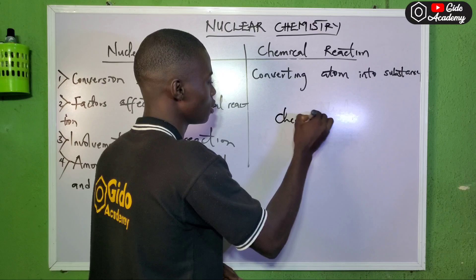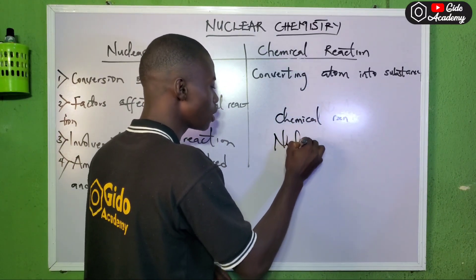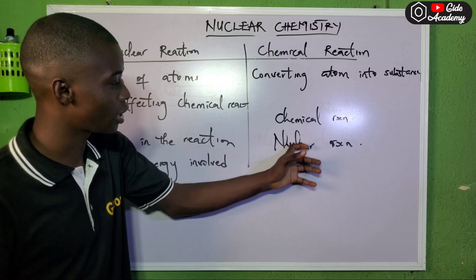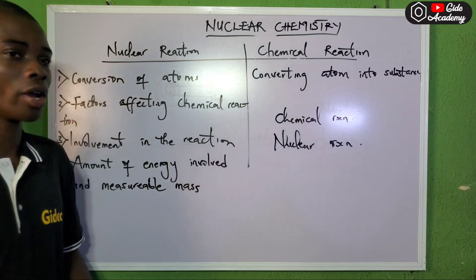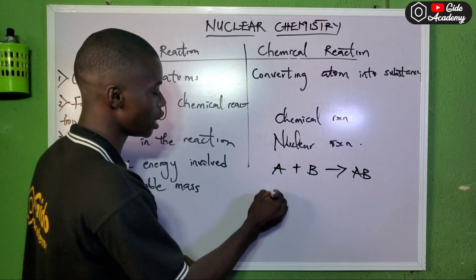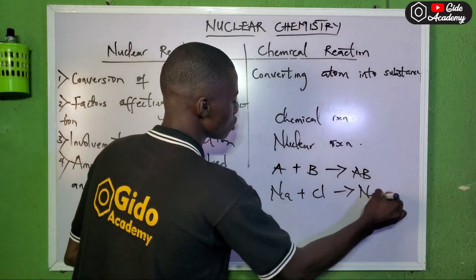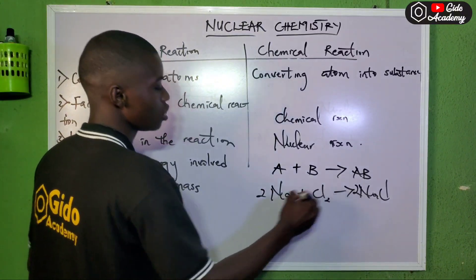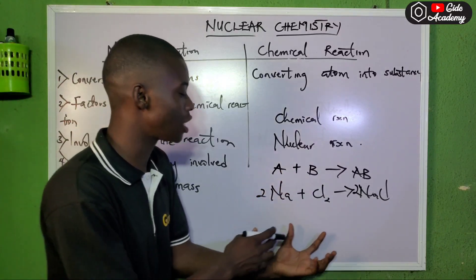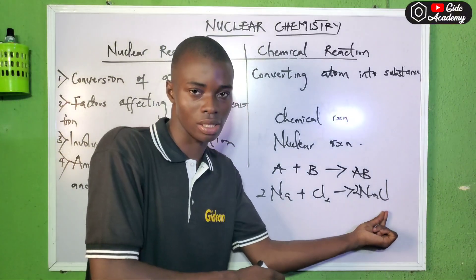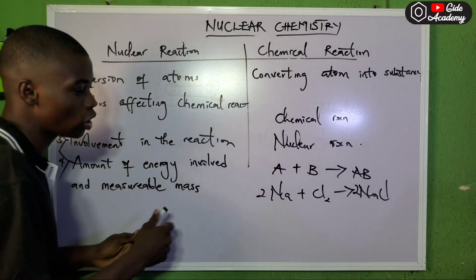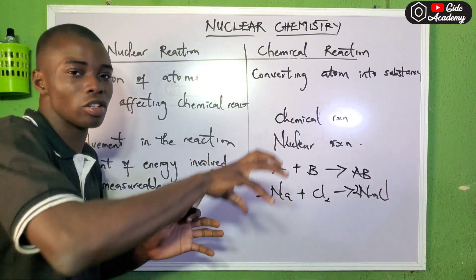Most of us are wondering: is it true that a chemical reaction is the same thing as a nuclear reaction? The answer is no. Nuclear reaction is not the same as chemical reaction. For a chemical reaction, for example, sodium plus chlorine gives us sodium chloride. This is a balanced chemical equation. In a chemical reaction, atoms of sodium react with atoms of chlorine to form a substance.